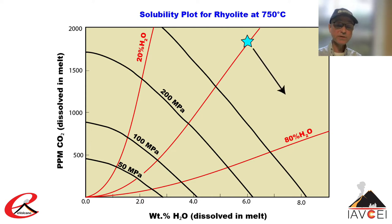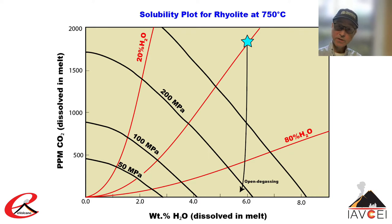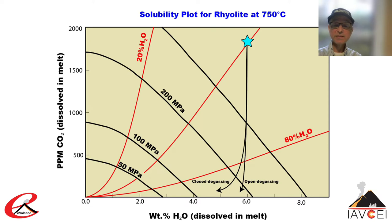If we add water-rich vapor to the system at constant pressure, or simply crystallize the magma, the melt composition and coexisting vapor will migrate parallel to the isobars and become more water-rich. If we drop the pressure on the system, the magma will degas, losing CO2 far faster than water due to its much lower solubility. This trend represents open-system degassing, where the vapor immediately escapes. The leftmost degassing path is instead a closed-system path, where CO2-rich vapor is allowed to stay in equilibrium with the water-rich melt as the magma rises and the pressure is continuously reduced. The trend becomes shallower if an accumulation of CO2-rich vapor is present in a closed system.